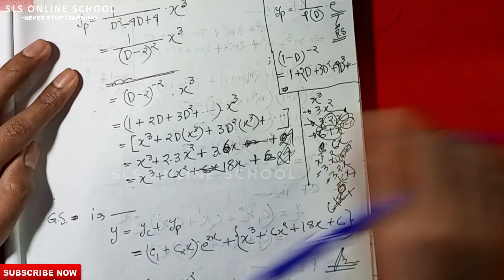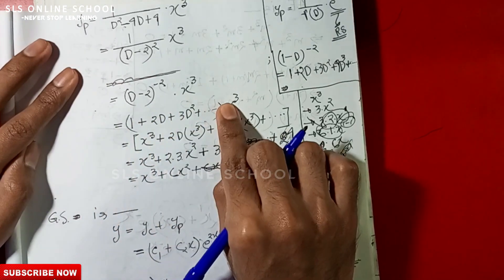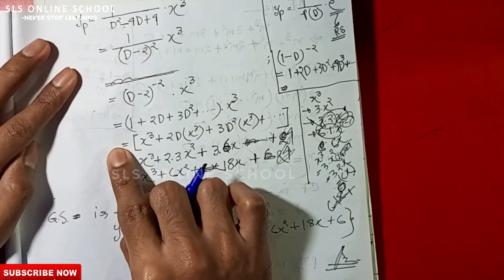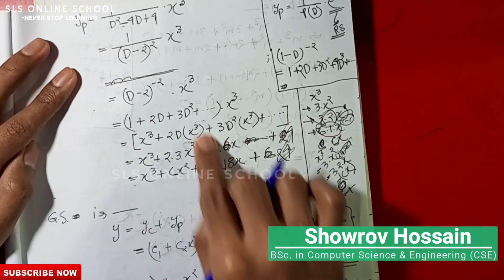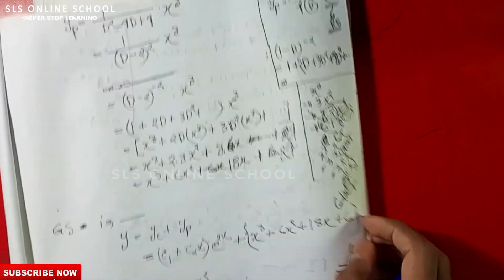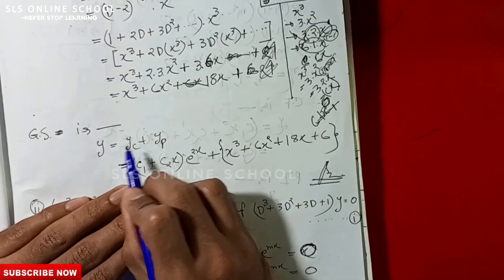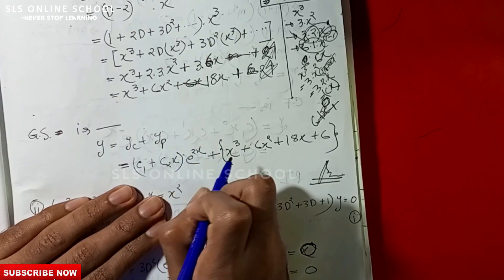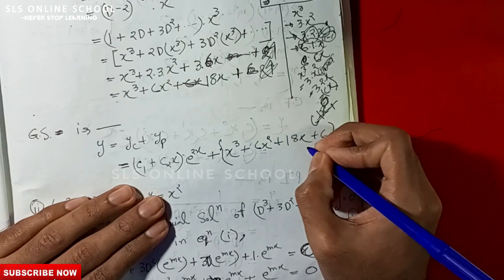Applying the operator expansion to x³, we compute the particular integral. Then the general solution is y = yc + yp, which combines the complementary function (c1 + c2·x)·e^(2x) with the particular integral. That is the final answer.